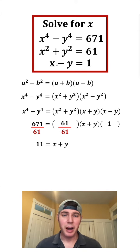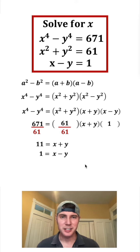So we can pull this bottom one down, which is 1 equals x minus y. And if we add these two rows together, 11 plus 1 is 12.